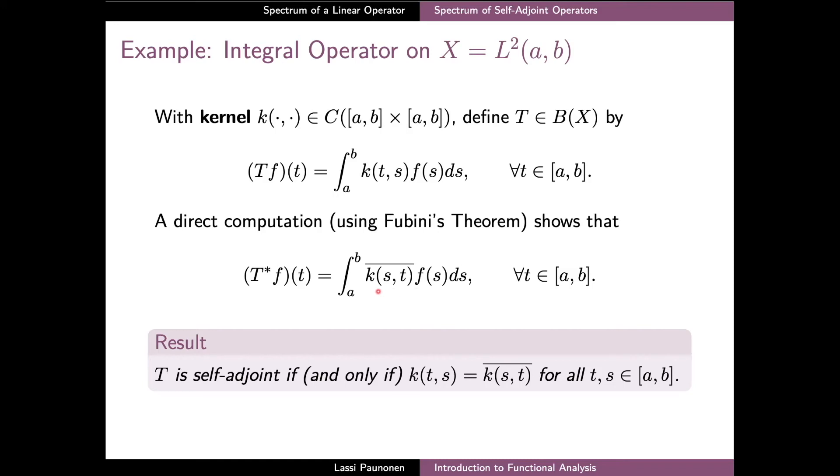Because of this, we can conclude that T is a self-adjoint operator if the kernel k is such that its value at t and s is the same as the complex conjugate of its value at s and t. Since in fact the kernel of our integral operators are unique, this is in fact also a necessary condition for the self-adjointness of T.